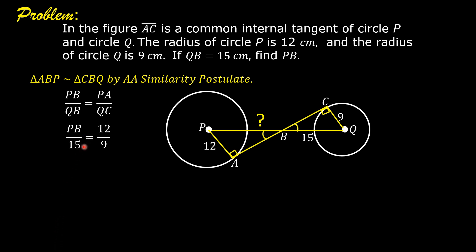So we have PB over 15 is equal to 12 over 9. Cross multiply: 9PB is equal to 12 times 15. So this is now equal to 9PB is equal to 180. Divide both sides by 9. So PB is equal to 20 centimeters.